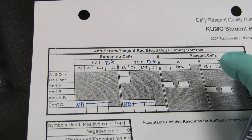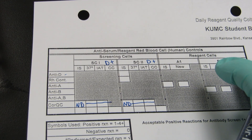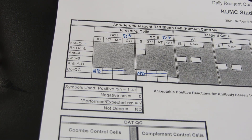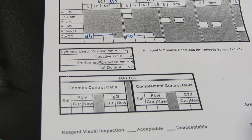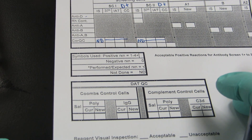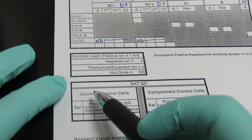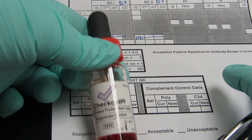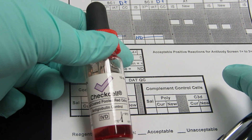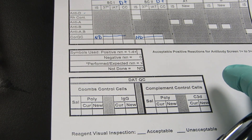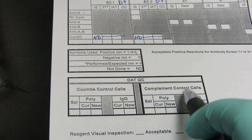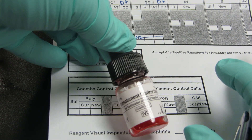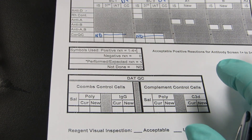So if you put anti-A with A1 cells, you better get a pretty strong positive or we should investigate. The bottom part of this form is the DAT QC. Across the top we have reagent cells — either Coombs control cells, which have a big check mark on them and are O cells coated with IgG — and we have complement control cells, which is a smaller bottle, only one per table usually, and this is an O cell coated with complement.